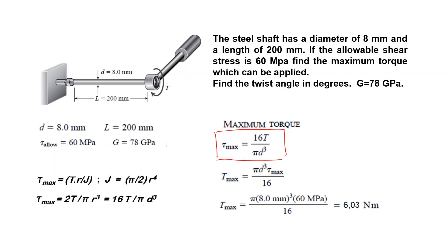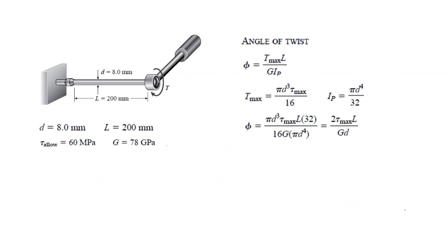What is known: we know that the tau allowable is given, we know the diameter, and the question is find the maximum torque which can be applied. So if you organize this equation so that we can find the T max and put the numerical values, the maximum allowable stress is 60 megapascals, diameter 8 millimeters, you have a result: 6.03 Newton meters is the torque you can apply to this shaft.